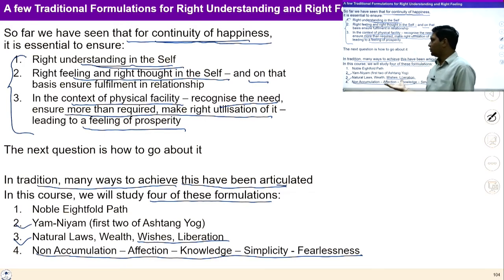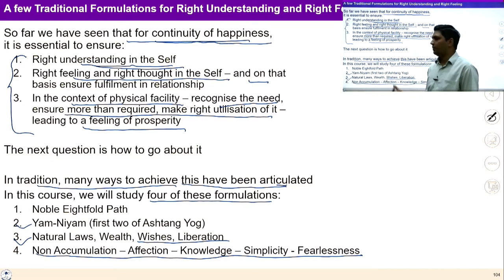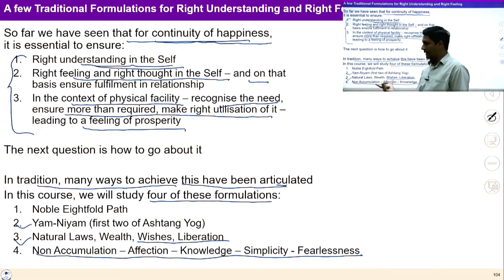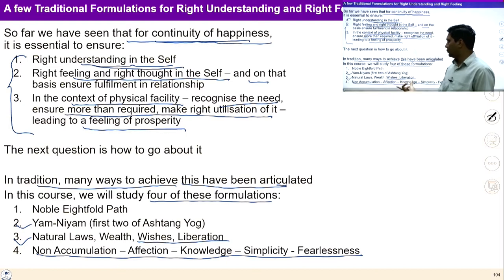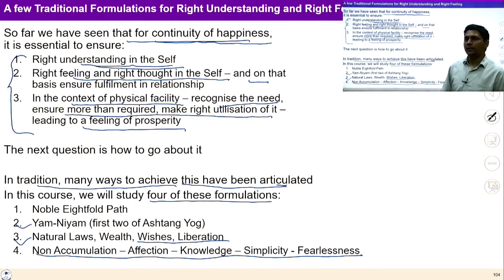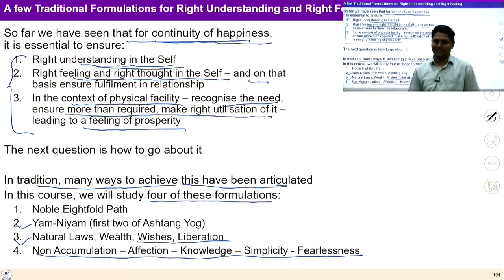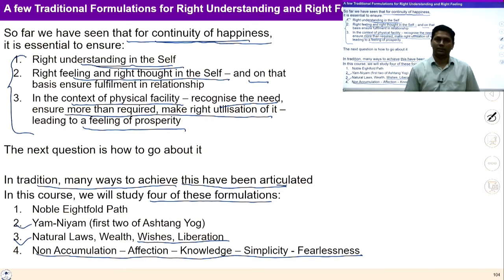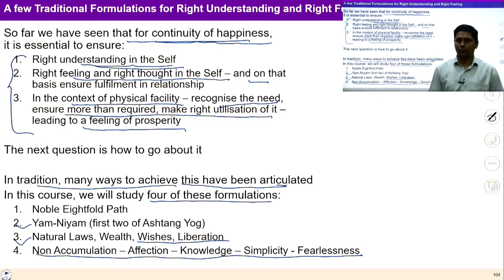In this course we are going to study four formulations: the Nobel Eightfold Path, Emnium, Natural Laws — Wealth, Wishes, Liberation — and the fourth formulation: Non-accumulation, Affection, Knowledge, Simplicity and Fearlessness. Let us start one by one.